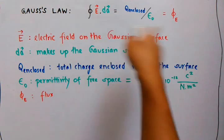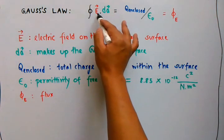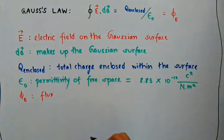Now this is Gauss's law. Let's have a look at the terms individually. E is the electric field on a Gaussian surface. What is a Gaussian surface? It is a closed surface in 3D through which the flux of a vector field is calculated.